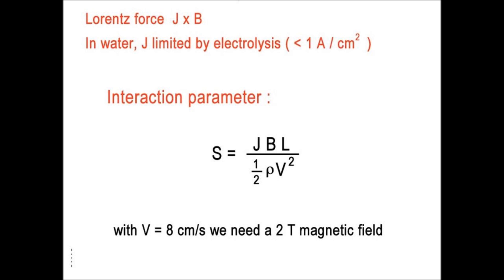This is the expression of the interaction parameter. If we use 8 centimeters per second flow, the computation gives that we need a two-tesla field. We cannot play with the value of the current density because of electrolysis. Electrolysis will completely destroy the experiment.